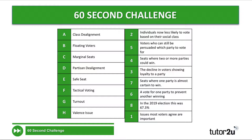Marginal seats: seats where two or more parties could potentially win the election. Partisan dealignment, which we mentioned in relation to class dealignment: the decline in voters showing loyalty to a party. Safe seats — kind of the opposite of marginal seats: seats where one party is almost certain to win, although in the 2019 election some apparently safe seats did change hands. Tactical voting: where people might vote for one party in order to prevent another from winning, so rather than voting for the party they most support or most align with, they use their vote tactically.